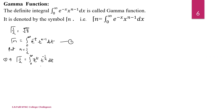We will convert this integration into an exponential function in terms of e to the power minus x squared. So put t equal to x squared. Differentiating, dt is equal to 2x dx.